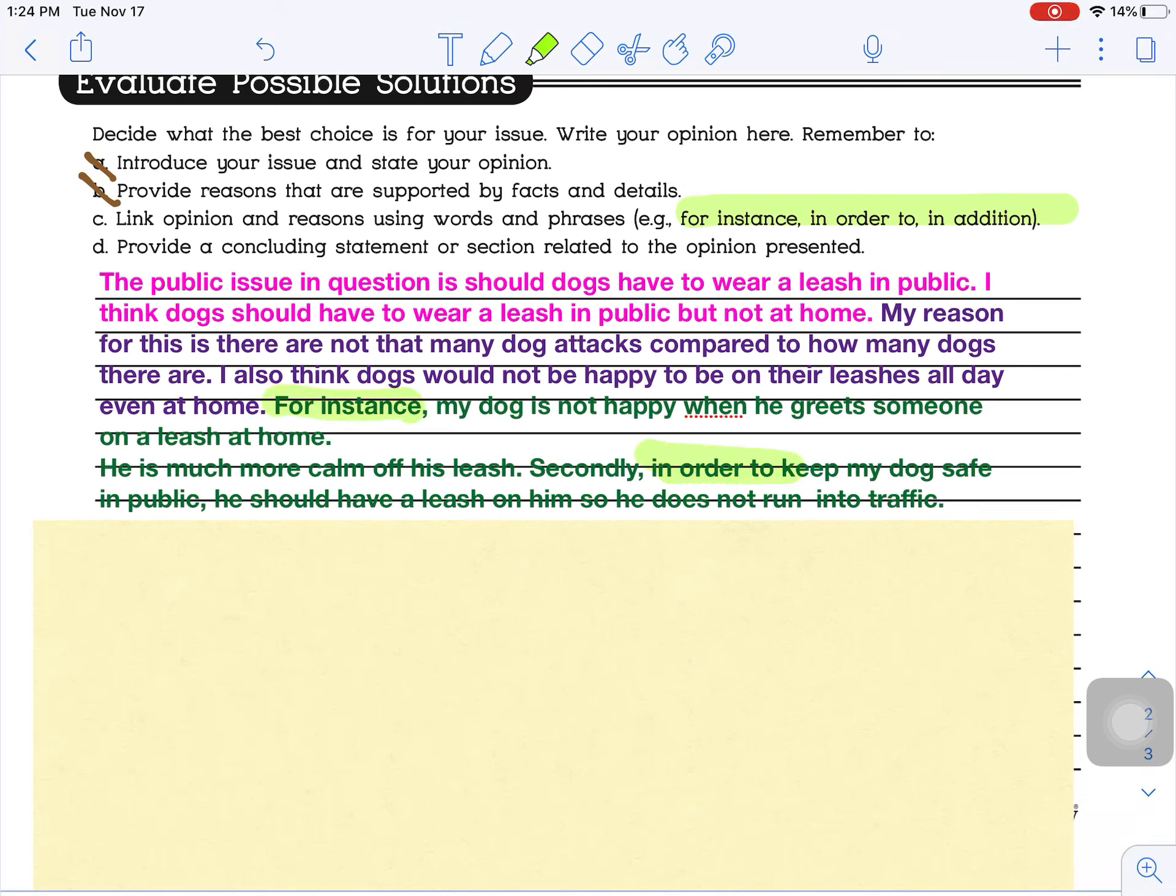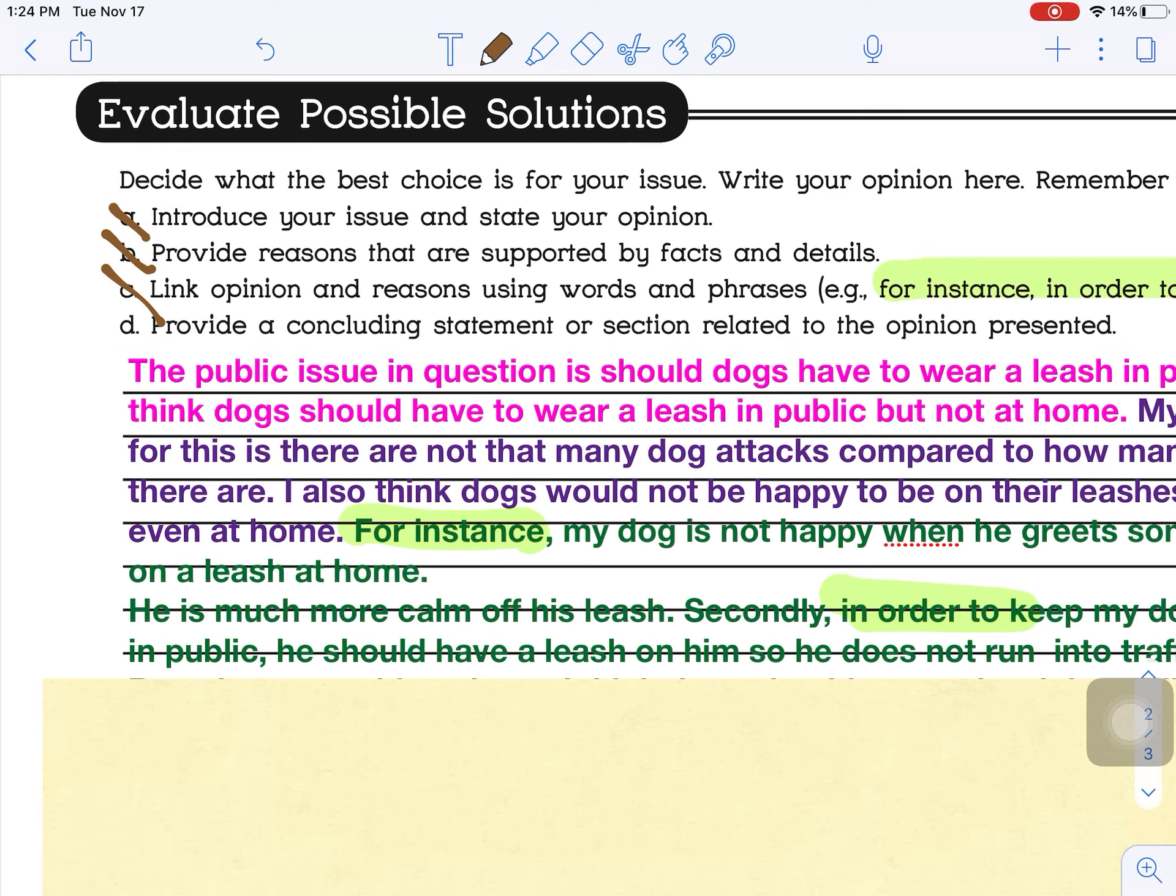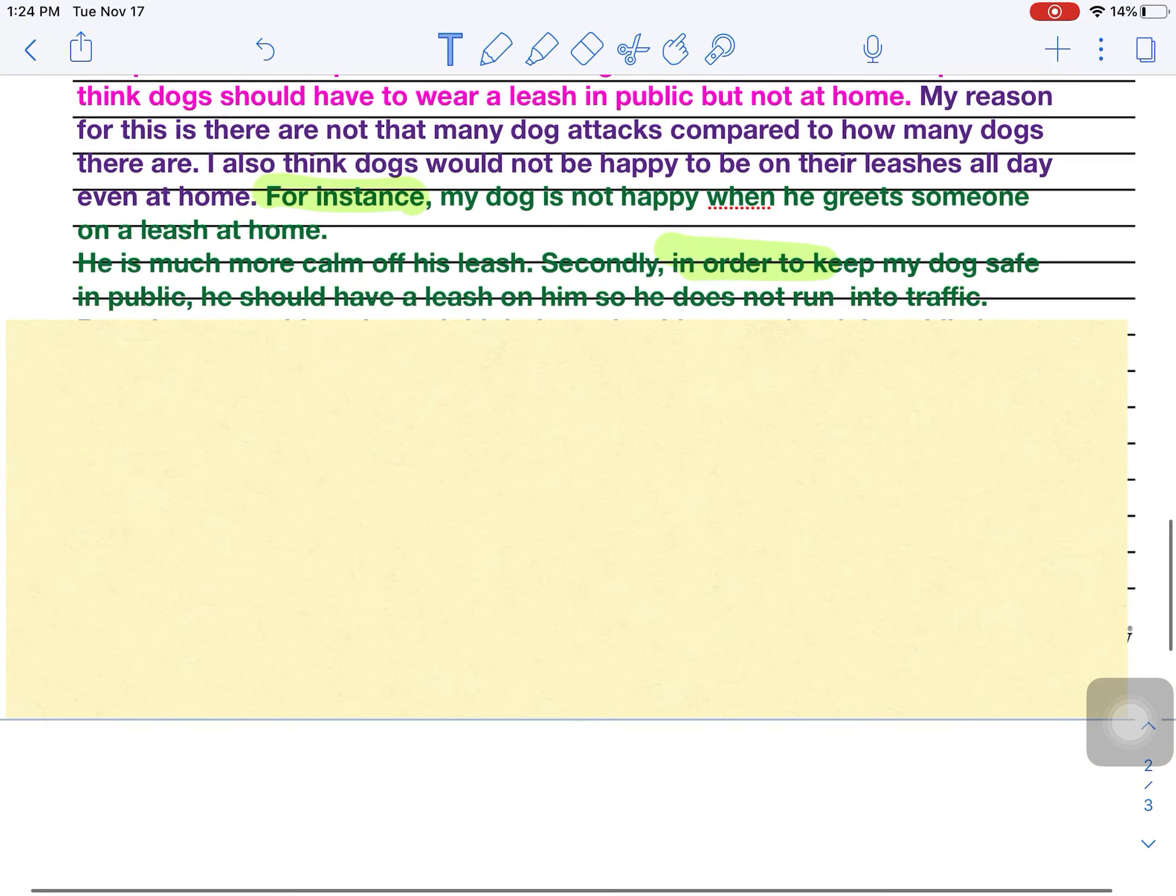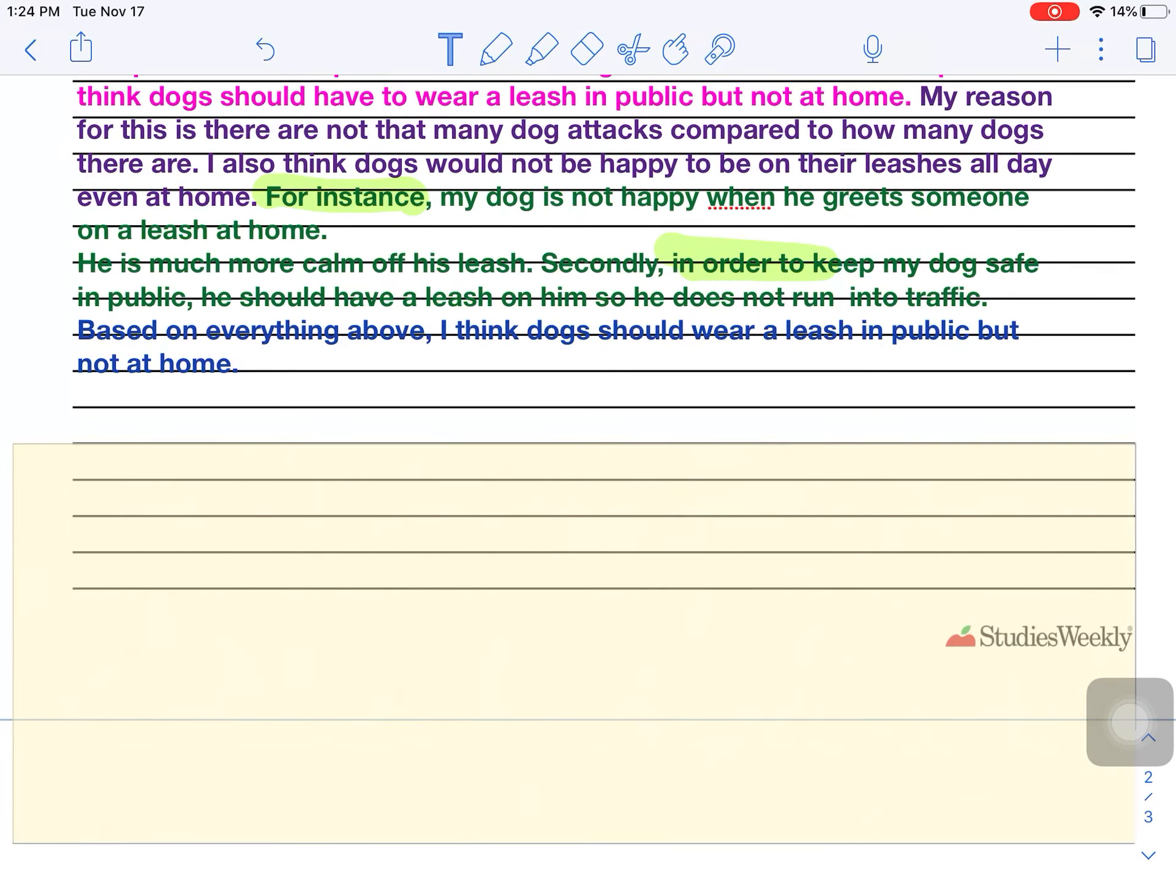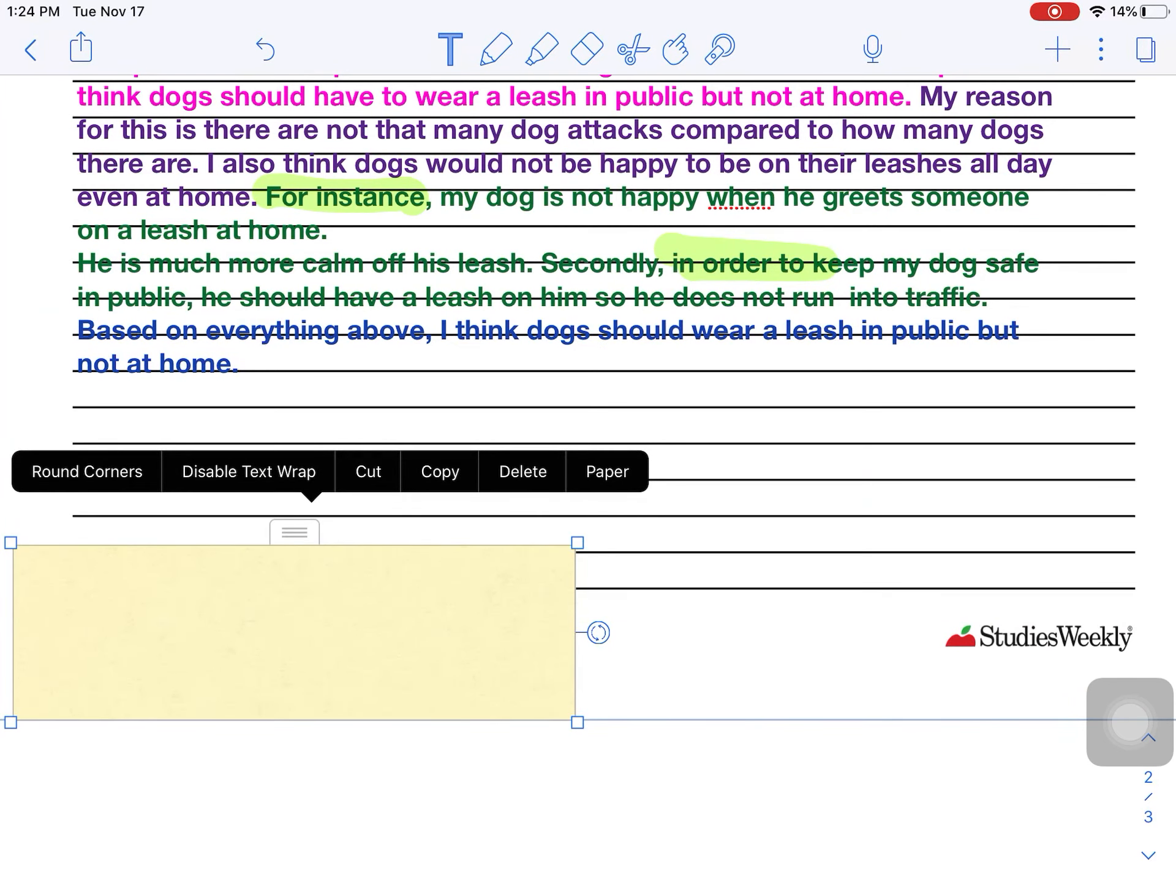And moving on to D, provide a conclusion statement or section related to opinion presented. So this is just me restating my opinion, restating what the public issue was, and coming to a conclusion on everything that I have just said before. So if I come down here, I can move my box out of the way. Based on everything, oh, let me make it smaller. Based on everything above, I think dogs should wear a leash in public, but not at home. So that is my opinion on this issue here. You might have a different opinion than me, and that's okay.